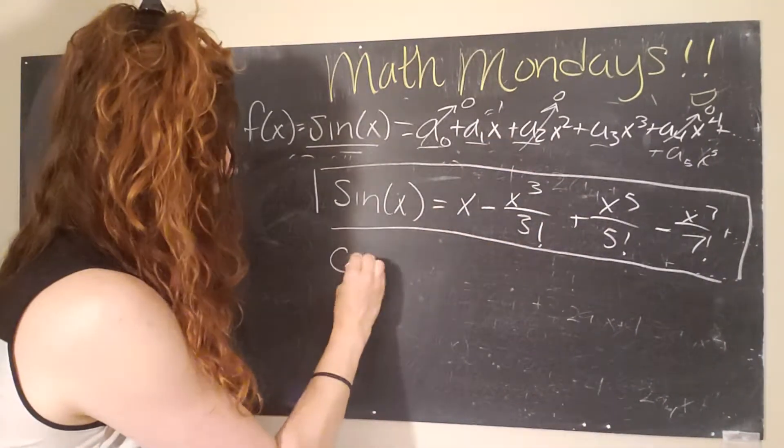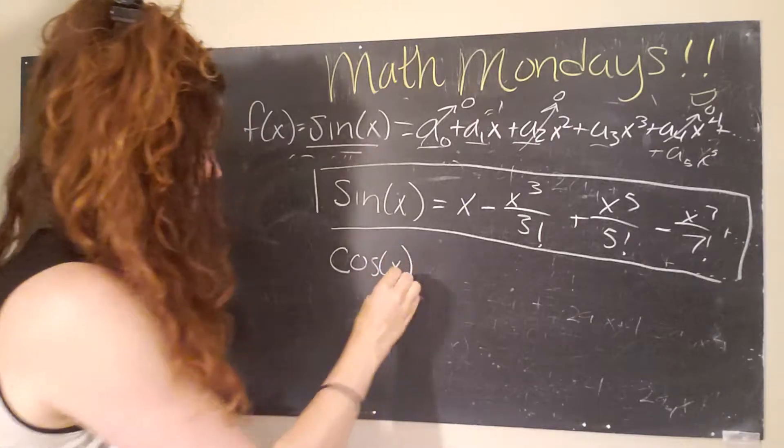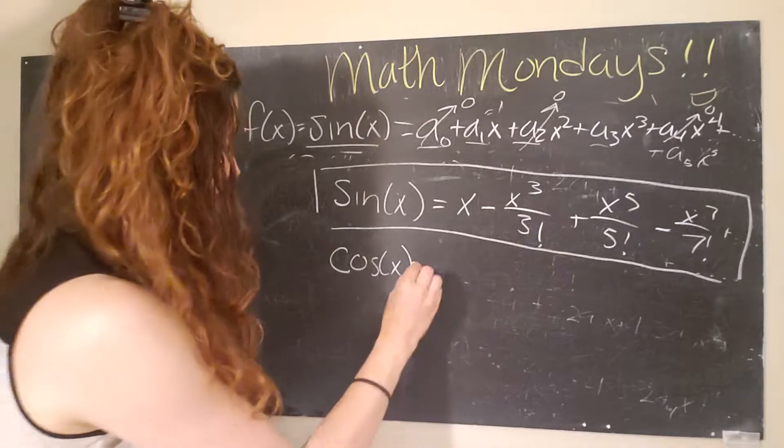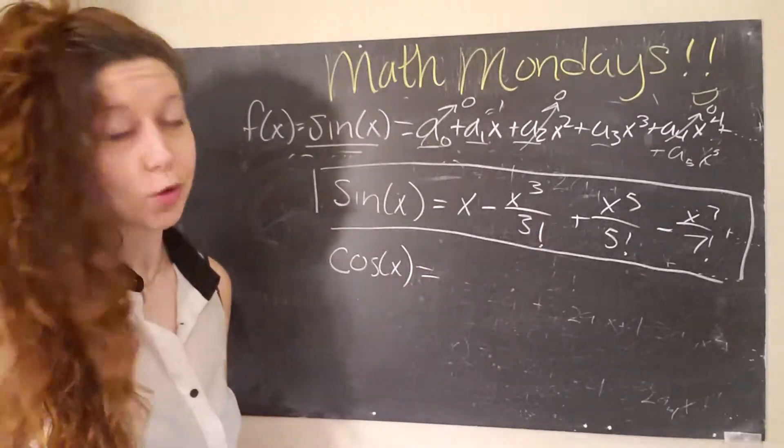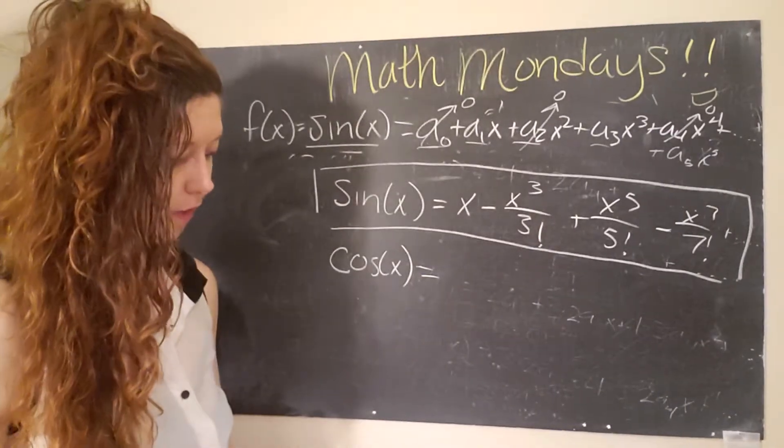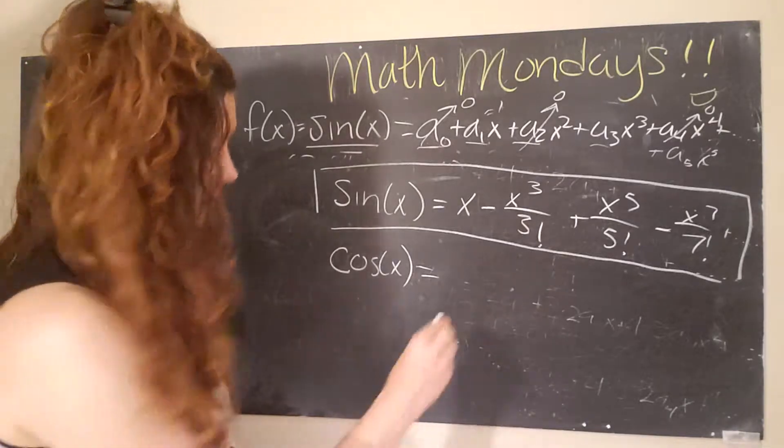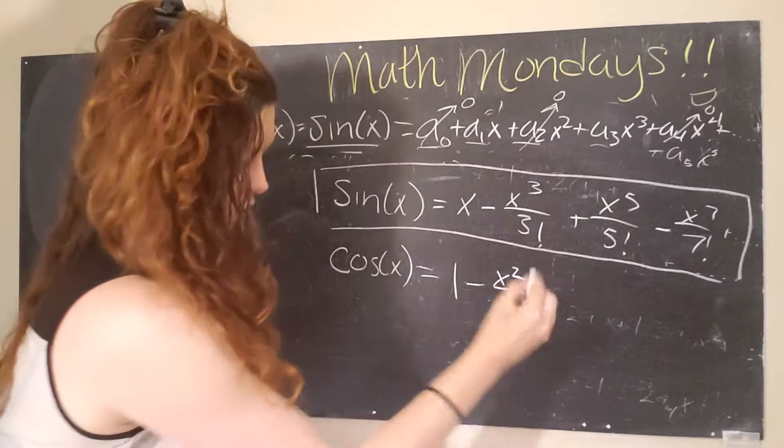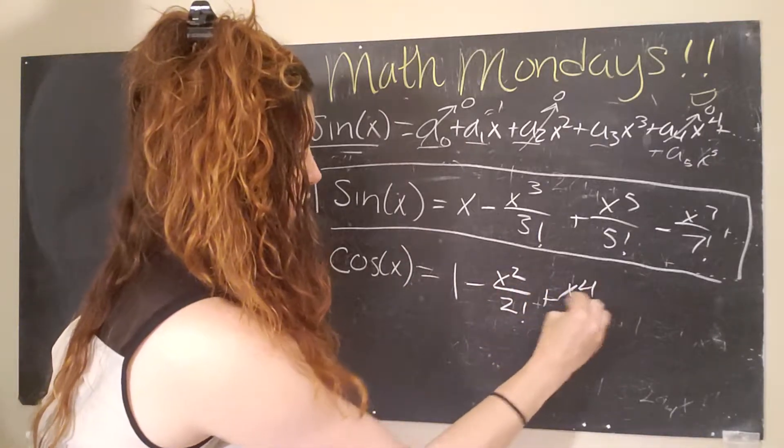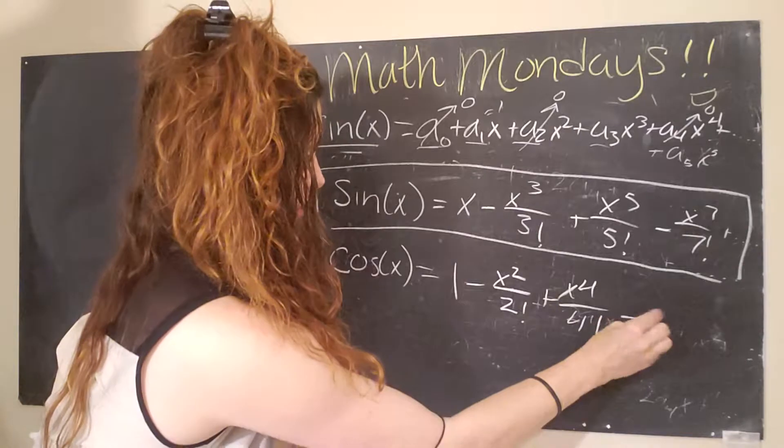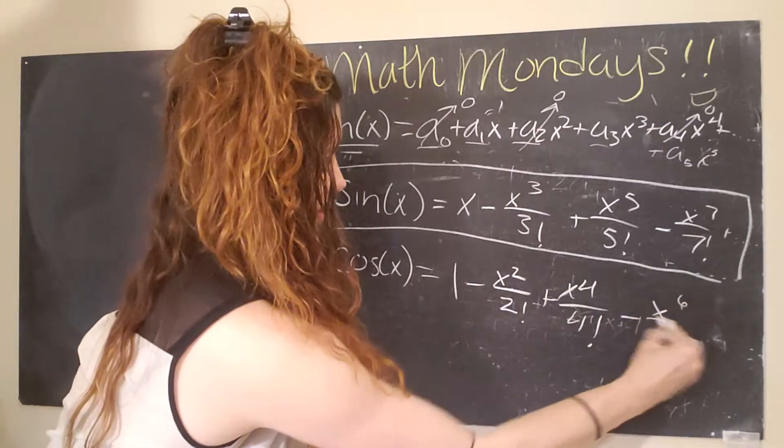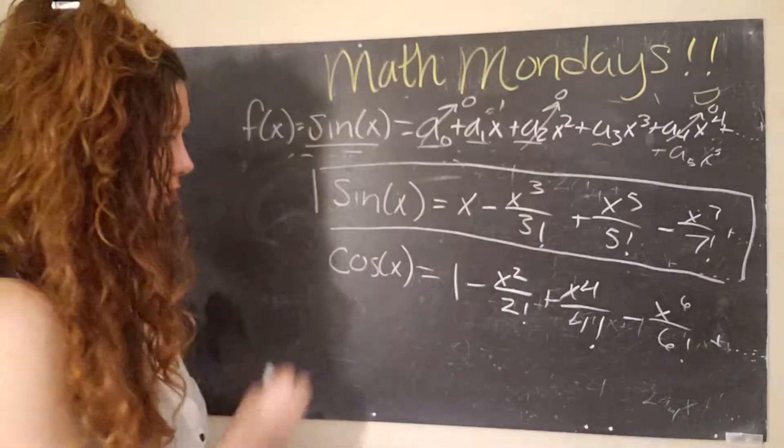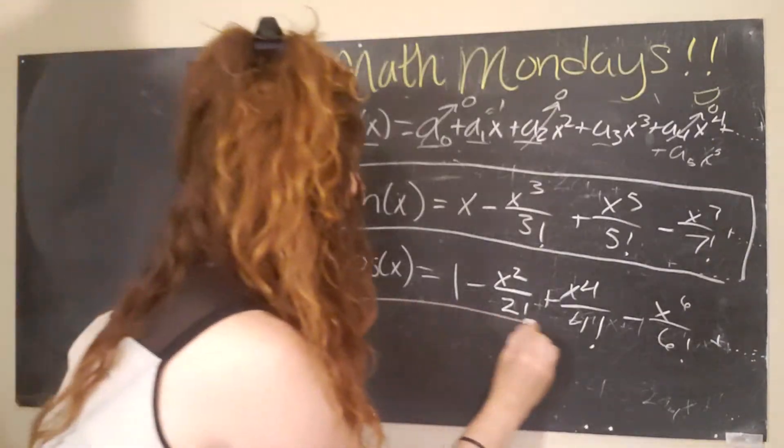And what you should find, if it's done correctly, lots of mathematicians have done this before myself. And so the power series or the Taylor series expansion of a power series for cosine of x is one minus x squared over two factorial plus x to the fourth over four factorial minus x to the sixth over six factorial plus, et cetera.